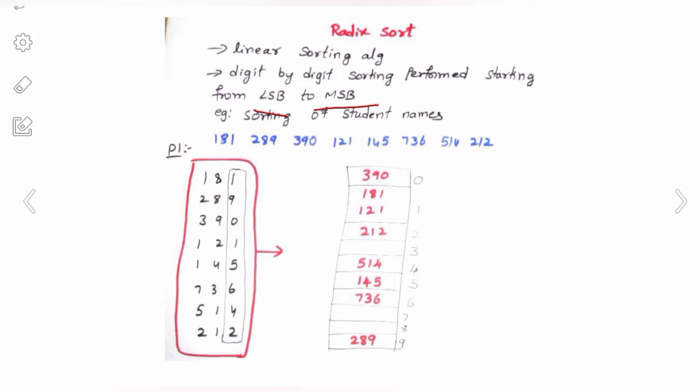We assume that all the numbers to be sorted are of equal digits. If you want to perform Radix Sort, all the numbers must have equal digits. For example, if you consider numbers like 181, each number has three digits — so only when all numbers have equal digits can we perform this sorting technique.